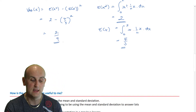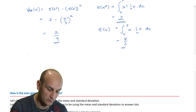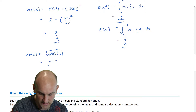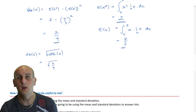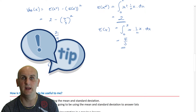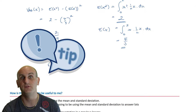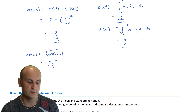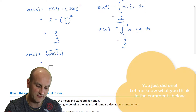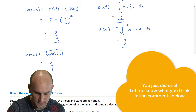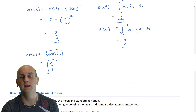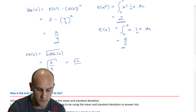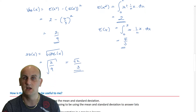Having found the variance, the standard deviation of X is the square root of Var(X) = square root of 2/9. A notation tip for VCE exams: the square root sign must enclose the entire fraction — it needs to go all the way over the 2/9. So the standard deviation is √2 / 3.